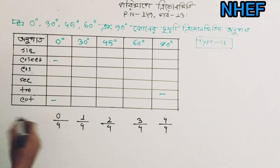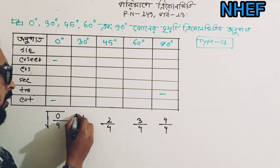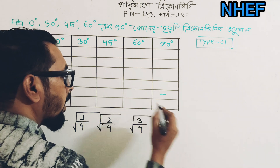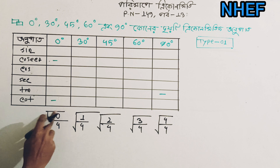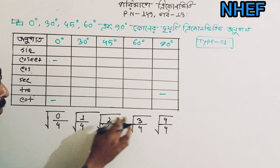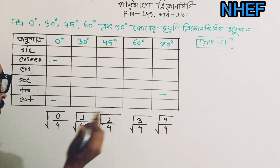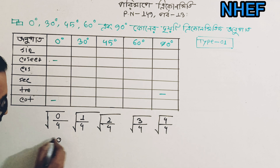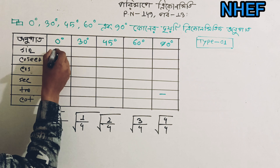So if you write it, you will write it as a word — you will write it as a fraction. Sin 0, 1, 2, 3, 4. If you write it as 4, you will write it as a root. Then write it to the root. If you write it as 5, you will write it as a root. So sin 0 degree is 0.